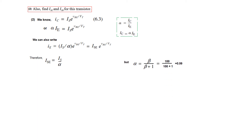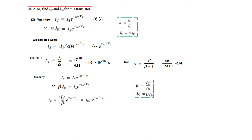We can now find the value of ISE, which is IS over alpha. We have beta given as 100, so alpha is 0.99. Plugging in: IS was 10 to the power minus 16, divided by alpha 0.99, giving ISE. Similarly, for ISB: IC can be written as beta times IB, so IB equals IS over beta times e raised to VBE over VT. We call IS over beta as ISB. With IS equal to 10 to the power minus 16 and beta 100, ISB is 10 to the power minus 18 ampere.